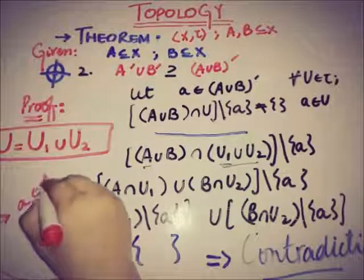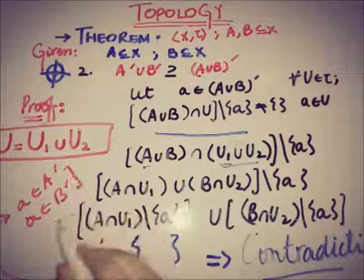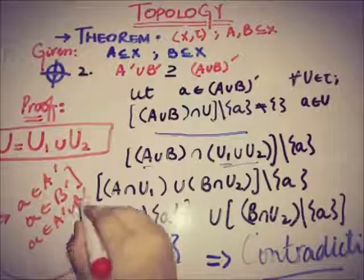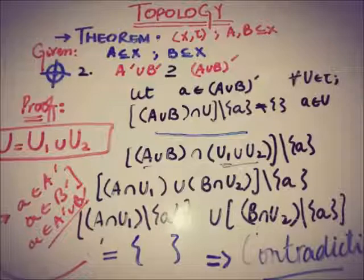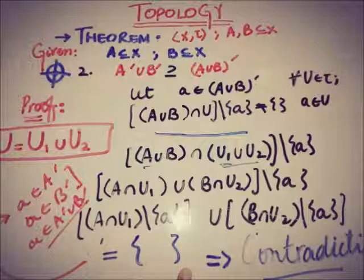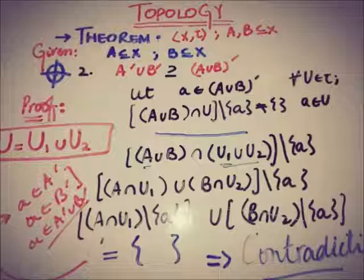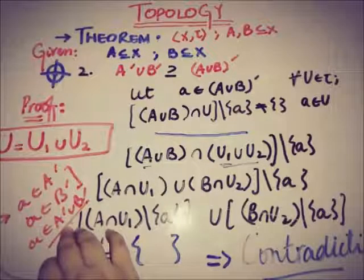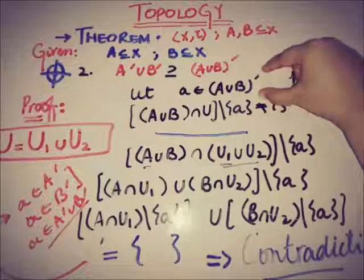Thus a belongs to A' and a also belongs to B', and this implies that a belongs to A'∪B'. We started by assuming a does not belong to A' or B', which led to a contradiction, proving the assumption was wrong.